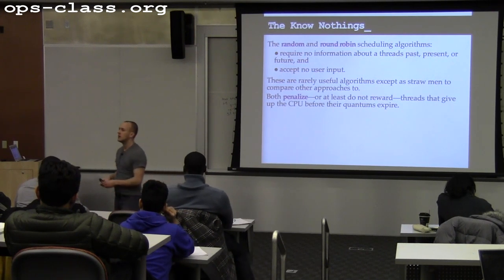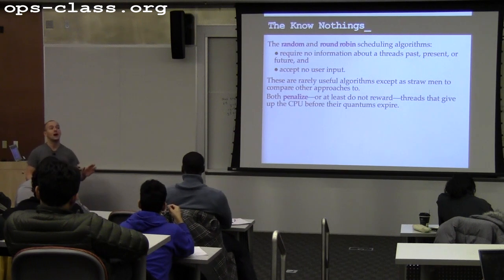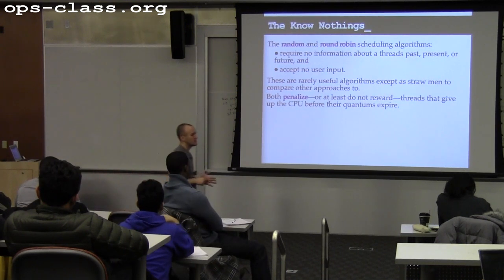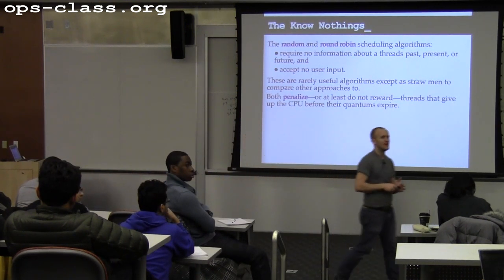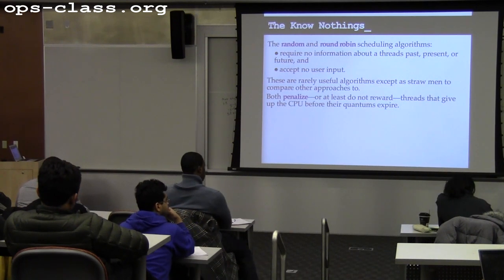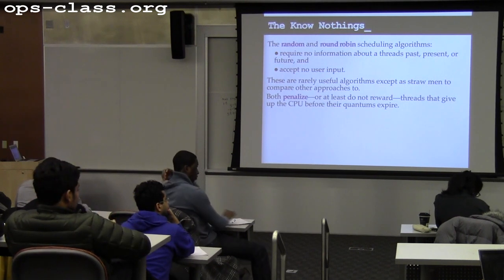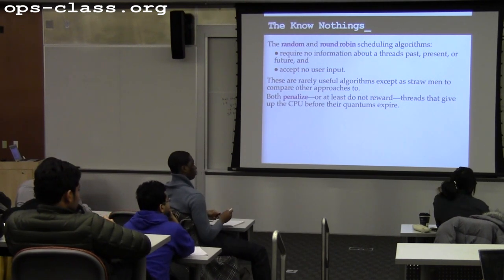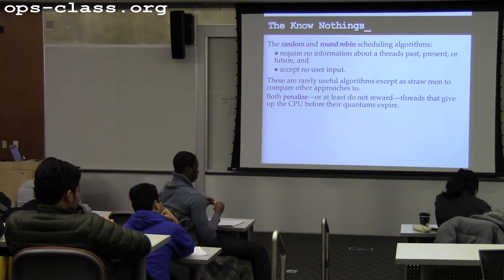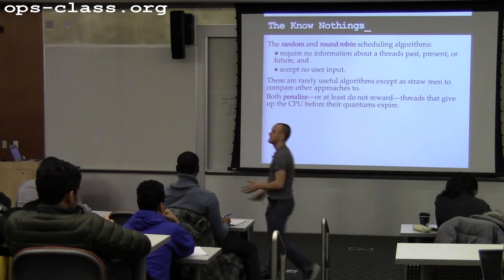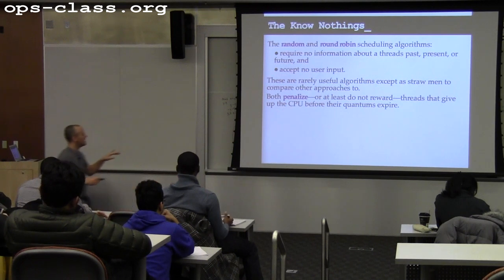This is one of the tricks that old Linux schedulers use to identify interactive threads — they look for threads that don't use their scheduling quantum. In contrast, a thread computing digits of pi will always run through its entire quantum; the OS always has to yank it off the CPU. A CPU-bound task always exhausts its quantum, while a keyboard input thread rarely does. We'll talk about this more when we discuss Linux scheduling on Friday.